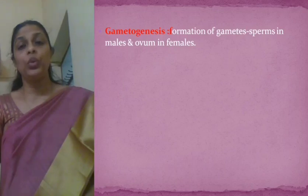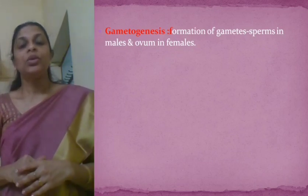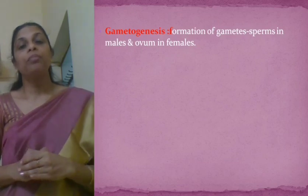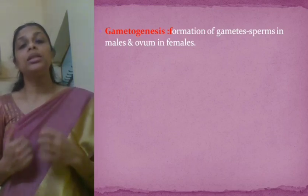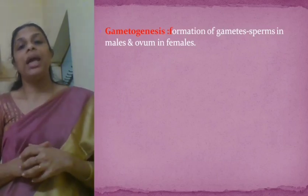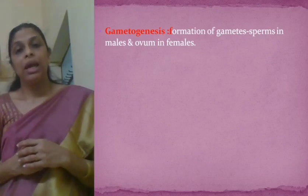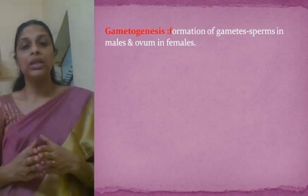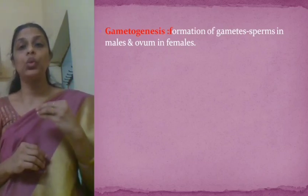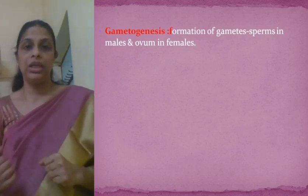Now let's see each of these. The first one is gametogenesis. From the term itself, it's very clear — genesis means synthesis, so gametogenesis means synthesis of gametes. The gametes in human beings are the male gametes, which are the sperms, and the female gamete, which is the ovum or egg. Sperms are formed in the testes and the ovum is produced in the ovary. So the formation of gametes within the gonads — the ovaries and testes — is called gametogenesis.